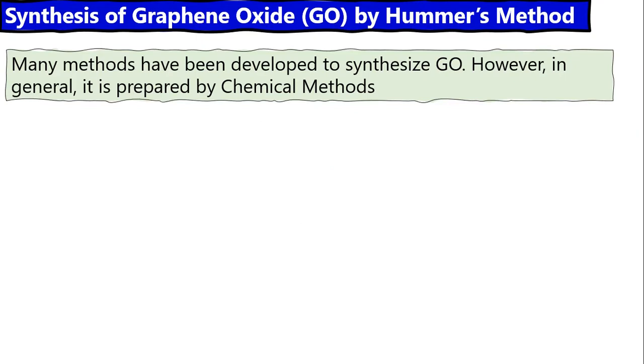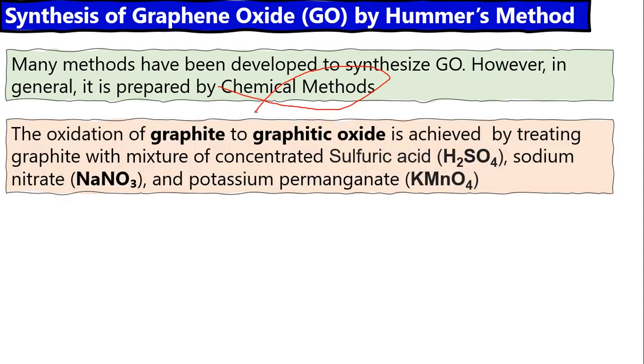Many methods have been developed to synthesize graphene oxide, but the preferable method is the chemical method. The method I am discussing is called Hummer's method, published by a scientist in 1958.